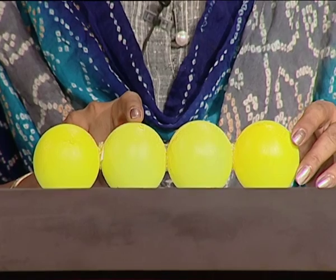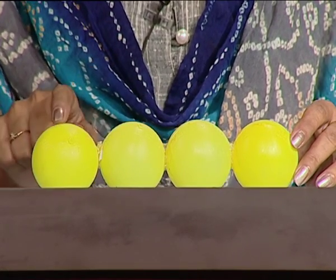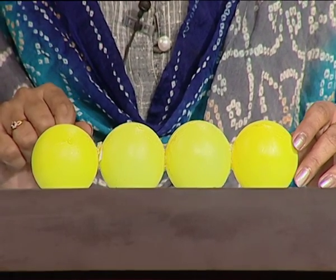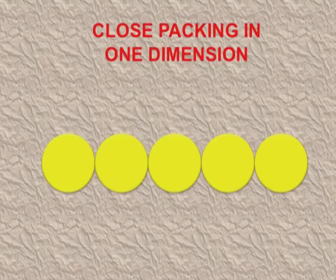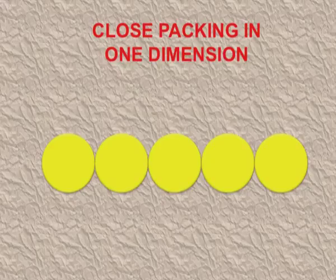The coordination number means the number of touching spheres, that is the number of nearest neighbors. Here the coordination number is 2 because each atom is touching two other atoms. So in single dimension or one-dimensional packing, the coordination number is 2. You can see the atoms are arranged in one row.